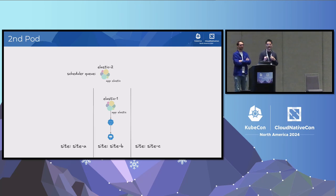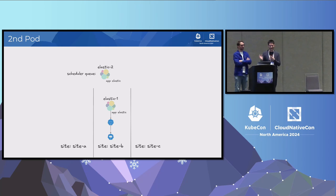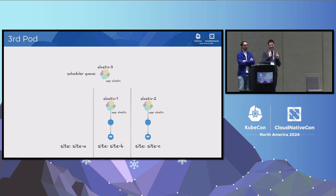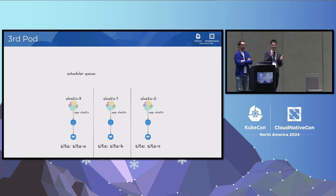When a new Elastic pod comes in, the scheduler looks at all the sites. It sees an Elastic pod running in site B and none in sites A or C, so it picks site A or C — for example, C. When a third pod comes, the scheduler has only one option: site A. This is what Pod Topology Spread Constraints do — they keep the balance. If there is no room in site A, the pod will be unschedulable.